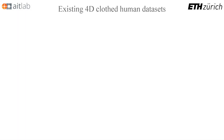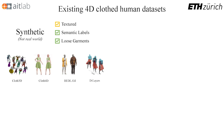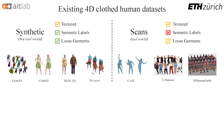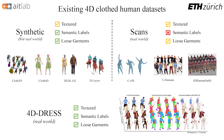Existing 4D datasets for clothed humans can be divided into two categories. Synthetic datasets cover various garment types, body models, and motions. However, simulated textures and motions typically show a domain gap between synthetic and real garments. Recorded scans provide real data, but up-to-date, the provided mesh sequences were not semantically labeled and usually lacked loose garments. 4D Dress is the first dataset that features high-quality textured scan videos with vertex-level semantic annotations, plus inner and outer garment meshes on top of registered body models.